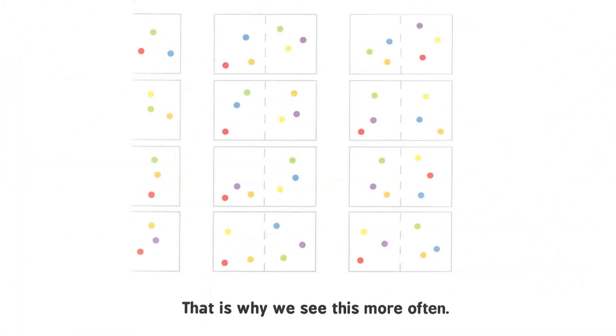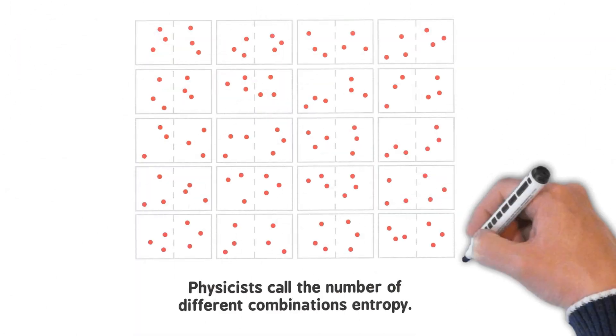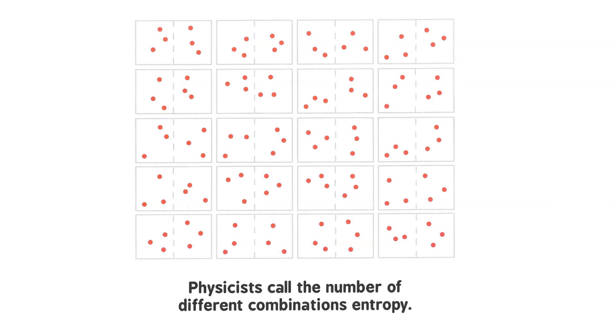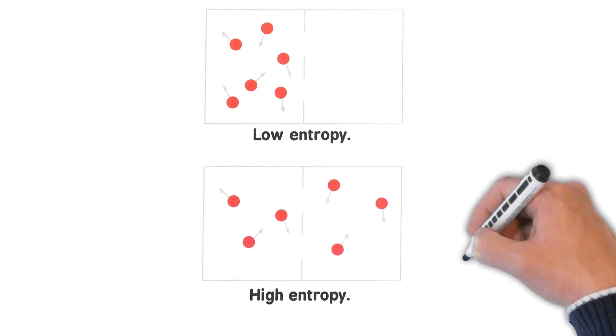That is why we see this more often. Physicists call the number of different combinations entropy. Low entropy. High entropy.